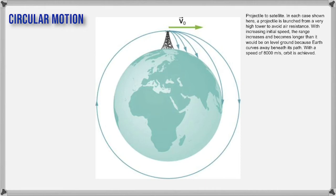I'm glad the escape velocity is big — otherwise people would disappear from the face of the Earth. We're going to prove those numbers in another chapter using calculus: 7.9 and 11.2. But this is just the introduction to circular motion.